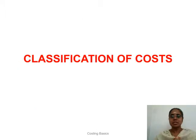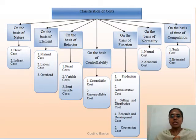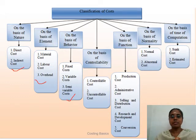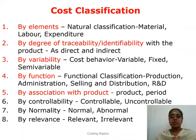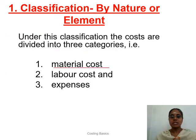Classification is the most fundamental thing in costing. We saw the first two types yesterday in detail and started the third. Based on elements or natural classification, you have classified cost as material cost, labor cost, and expenses.